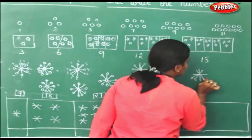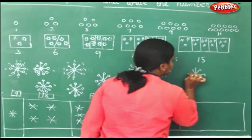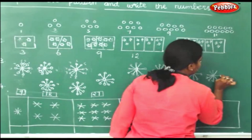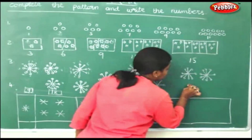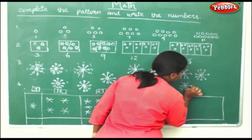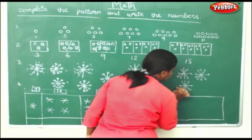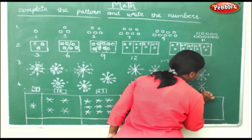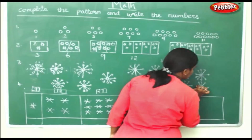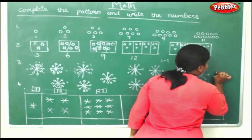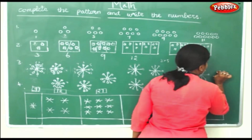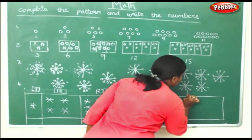Drawing petals for each of the 5 flowers, counting 9 petals each time. After completing all 5 flowers: so this will be 45.